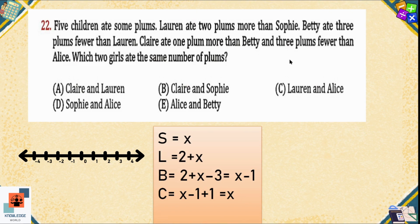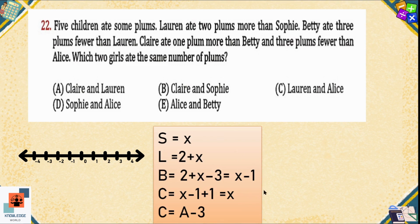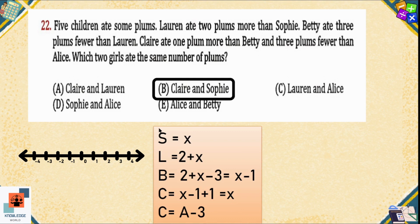Completing the question: it is also stated that Clare ate three fewer plums than Ellis, meaning Ellis ate three more than Clare. The question asks which two girls ate the same number of plums. As we calculated, Sophie and Clare both ate x plums. So option B is the correct answer.